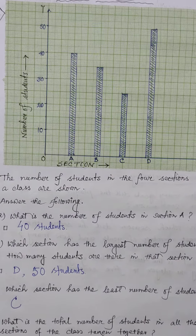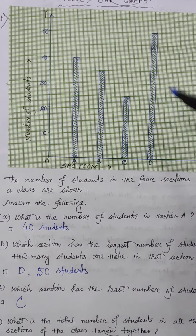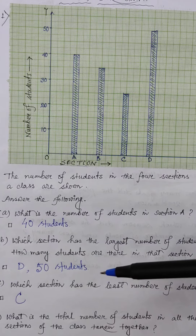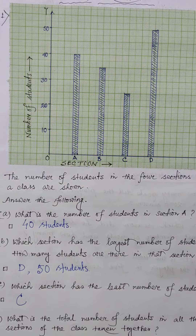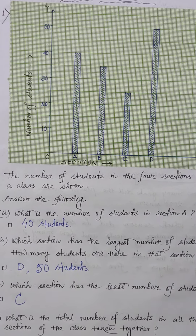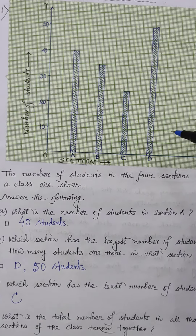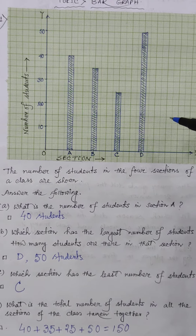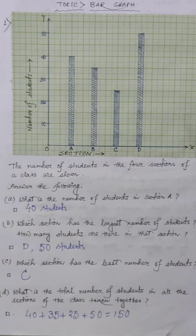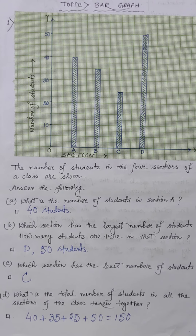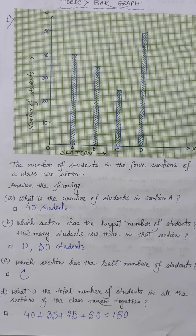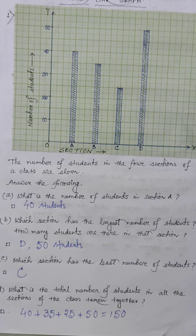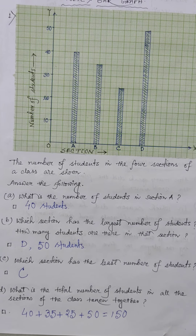In bar graph there are two types of problems. One is where the graph will be shown and some questions will be given — you have to solve the questions by seeing the bar graph. The second type is where data will be given and you have to construct the bar graph. That part we will do in our next class.